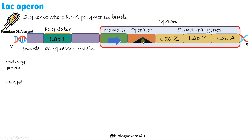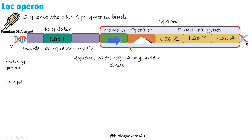Binding of this repressor protein to the operator inhibits the transcription of structural genes by RNA polymerase — it prevents the movement of RNA polymerase, thereby inhibiting transcription. In the absence of this repressor protein, RNA polymerase can proceed and transcribe the structural genes, forming an mRNA. The set of genes in this operon are transcribed together under a single promoter, forming a polycistronic mRNA.